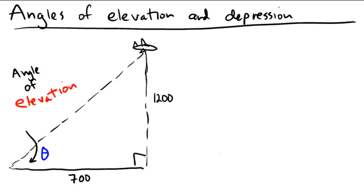In this triangle, we have the angle theta. We're told that the airplane is 1200 feet above ground and the person is 700 feet from the airplane along the ground. So we need a trig function that's going to relate the opposite side, the opposite leg, with the adjacent leg.